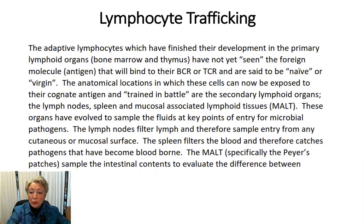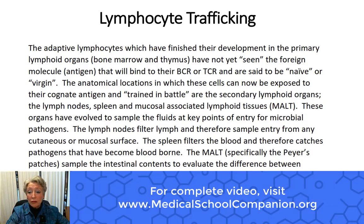In previous modules, what we've been discussing is the development of the immune cells that are needed to protect our bodies. We've talked about their development in the bone marrow, their selection either in the bone marrow or the thymus, and now we're ready to set these mature naive cells — these virgin cells — out into the body to do the job that they're designed to do.